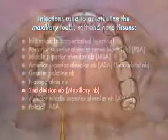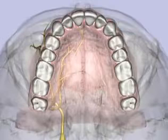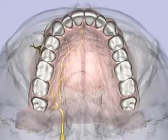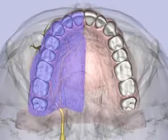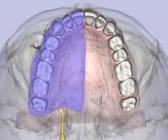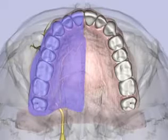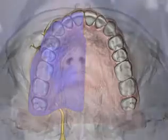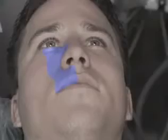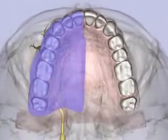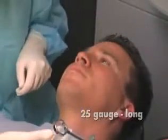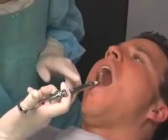The maxillary or second division nerve block provides pulpal anesthesia to the maxillary teeth on that side, the buccal soft tissue and bone overlying these teeth, the soft tissues and bone of the hard palate and part of the soft palate medially to the midline, and the skin of the lower eyelid, side of the nose, cheek, and upper lip. A 25 gauge long needle is recommended, following completion of the greater palatine nerve block.